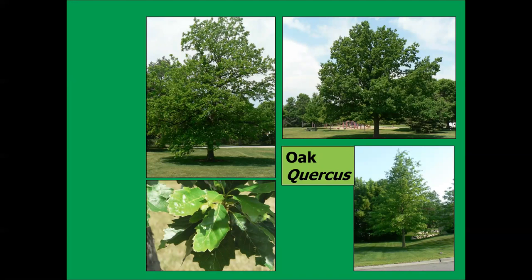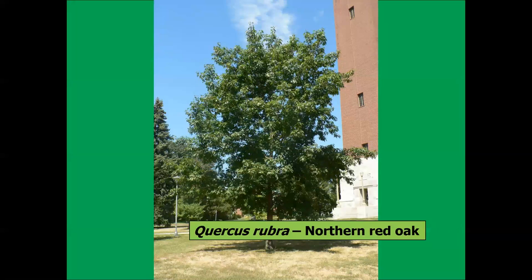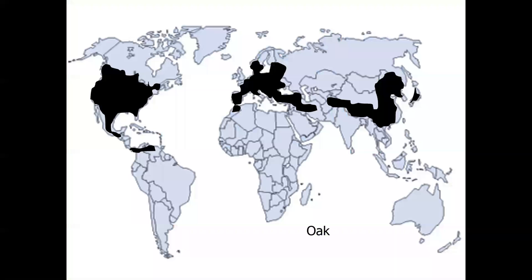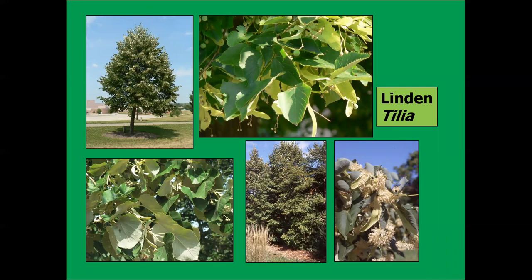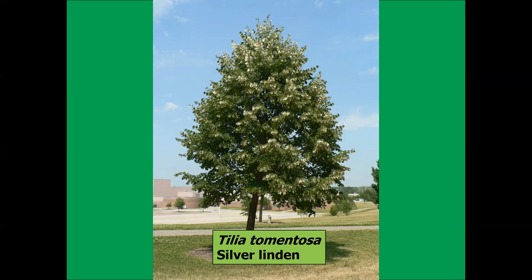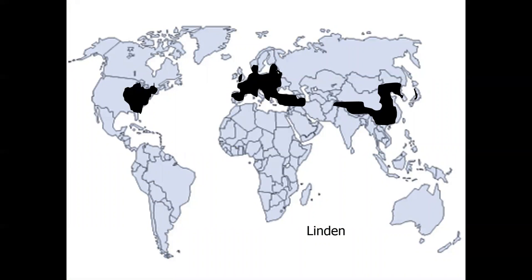Another genus I worry about is oak. Oaks are magnificent trees — northern red oak has magnificent fall color — but look at how many continents oak is found on and how many potential sources for exotic threats we have. Linden is the same way. And crab apples and Malus are found everywhere. So a lot of the genera we flock to for planting have a lot of related species on other continents. We need to be thinking about this when we start planting these as ash replacements.